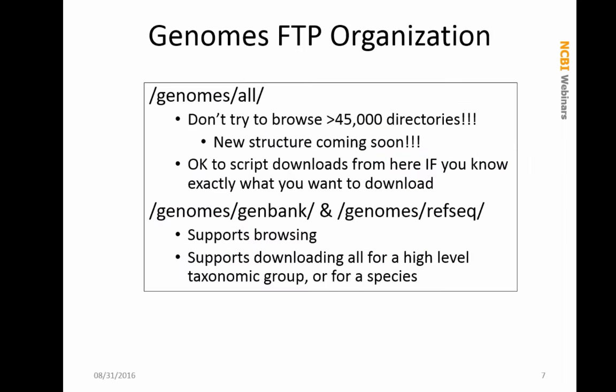If you go to our FTP site — the base URL is ftp.ncbi.nlm.nih.gov — there are three main directories. There is the genomes_all directory, where we will be pointing a lot of our URL paths today. You cannot browse this currently; if you tried to open it in your web browser it would fall over because there are more than 45,000 directories in there. The two directories that are browsable are genomes_genbank and genomes_refseq — they support browsing and downloading for high-level taxonomic groups, and you can drill down to the species level.